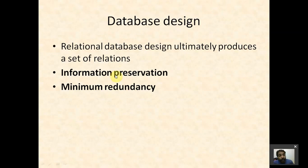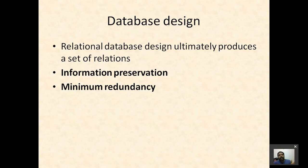Information preservation means that whatever information existed in the analysis stage should be preserved even after doing this design. For example, if you are storing the address of some person, that address should still be there after we design these tables — none of the information should be lost. Also, we have to minimize redundancy. We cannot completely remove redundancy from relations, but we can minimize it.